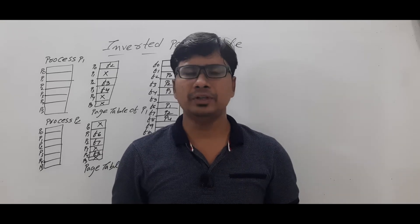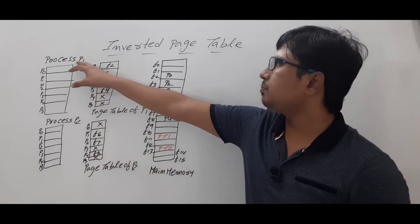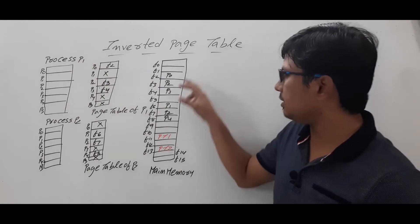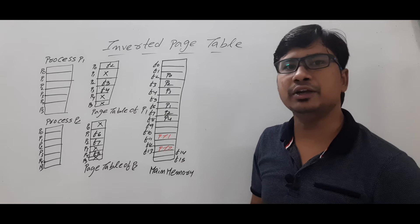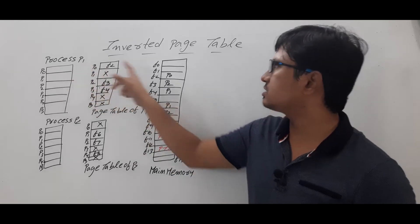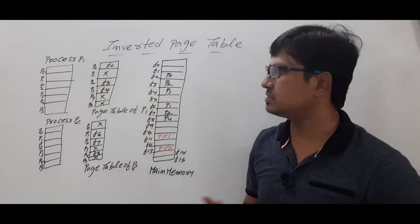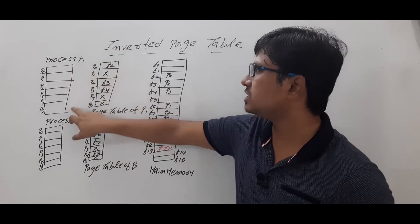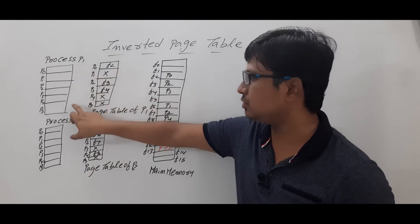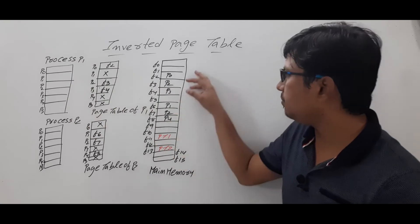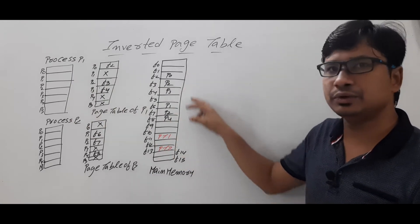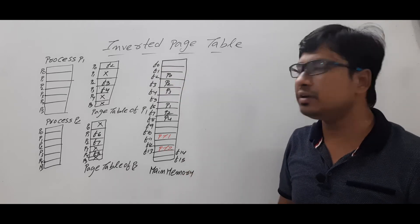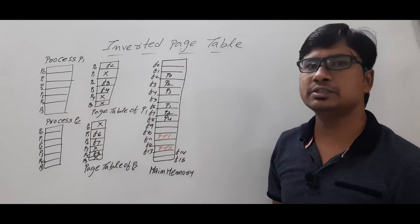First let me give an overview about paging. In paging, the process will be logically divided into pages and main memory is logically divided into frames. The page size will be equal to the frame size. For example, process P1 is logically divided into six pages starting from page number zero to page number five, and main memory is logically divided into 16 frames starting from frame number zero to frame number 15.